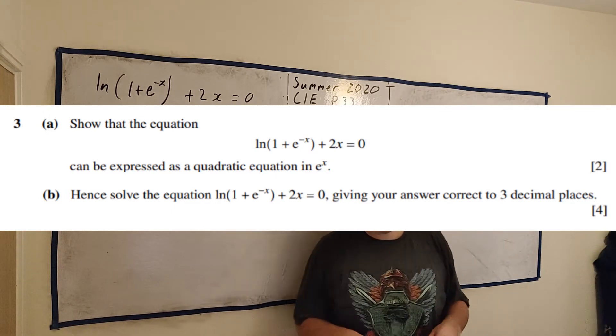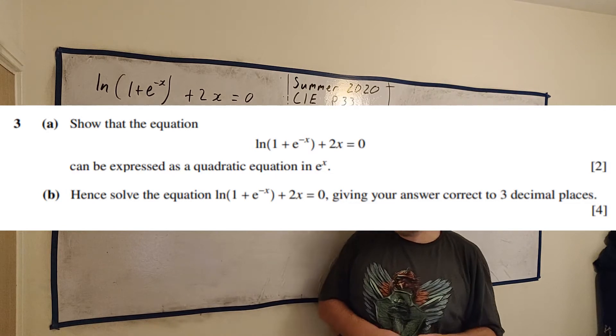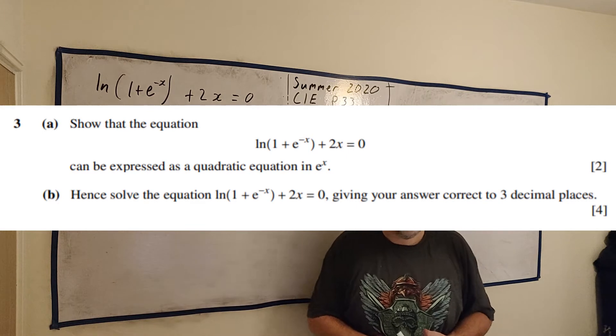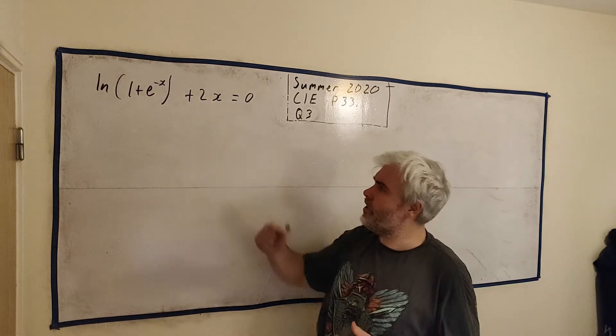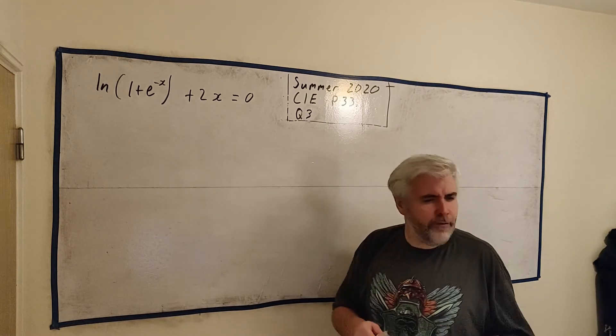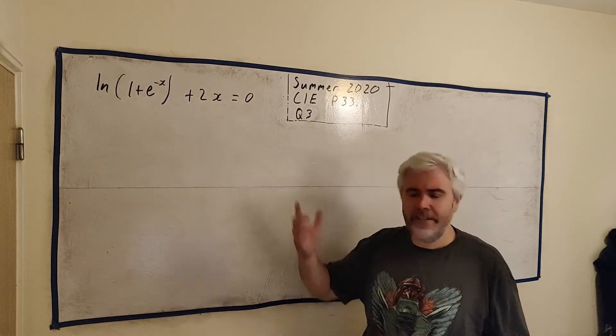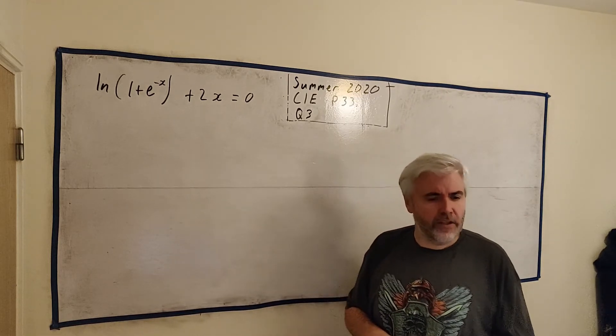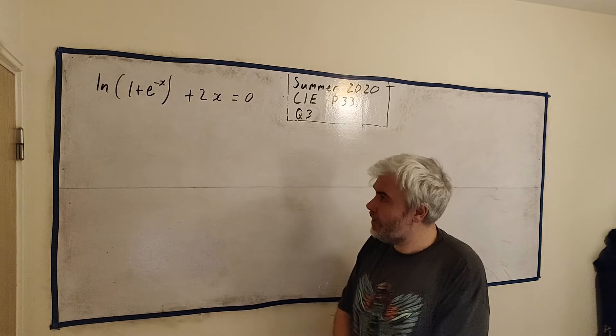Below the video you'll find a link in the description that will give you an image of this question so you can try it before looking at my solution. In this question they give us this equation with natural logs and exponentials and they first ask us to show that this can be expressed as a quadratic equation. Then for part b they're going to ask us to solve that quadratic equation.